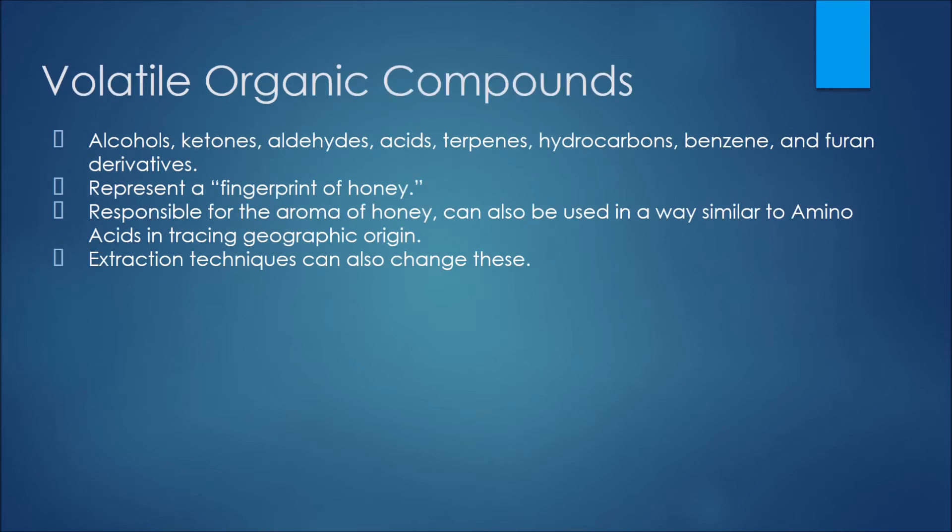The second method is by examining the honey's volatile organic compounds. These include things such as alcohols, ketones, aldehydes, acids, terpenes, hydrocarbons, benzene, and furan derivatives. These different compounds represent a fingerprint of honey, and although they are not present in high concentrations, they are directly responsible for things such as the aroma and even the taste of the honey. The volatile compounds can change the price of honey because of these characteristics. These are also influenced by the flora the honey is around when it is formed as well as the nectar. Because of this, they can be used to trace the honey back to its origin. However, there are other ways that VOCs can be altered in honey, including the extraction technique used to retrieve it. Because of this, they are not a perfect method for locating the origin of honey.